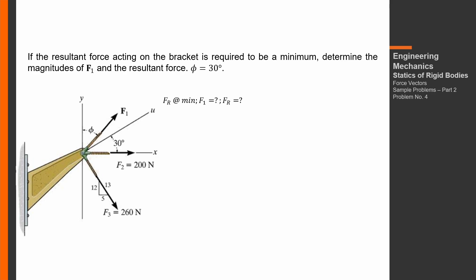The question is: if FR is at minimum, what is F1 and the magnitude of the resultant force? So, FR² equals FRx² plus FRy². The x-component summation FRx includes the x-component of F1, which is F1 sine(phi) — sine is used because the x-component is opposite to angle phi — plus 200 along the x-axis.